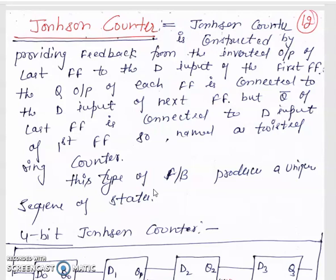Good morning friends. Today we are going to get familiar with the Johnson counter. It is a shift register counter type. The Johnson counter provides feedback from the inverted output of the last flip-flop — that is Q-bar of the flip-flop output — to the D input of the first flip-flop. This type of feedback produces a unique sequence of states that does not happen in a ring counter.